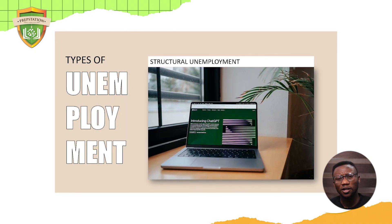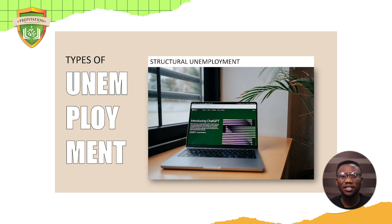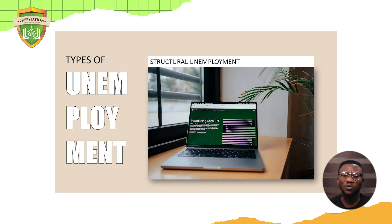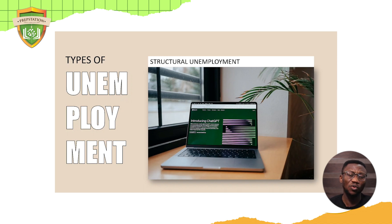Structural unemployment is about being unemployed because the demand for your skill has disappeared. Many people have been rendered unemployed in the banking industry simply because their skills are no longer required. We have a lot of technological advancement — AI tools, chat GPT, drones, and many other machines — that are making people not needed anymore in many industries.